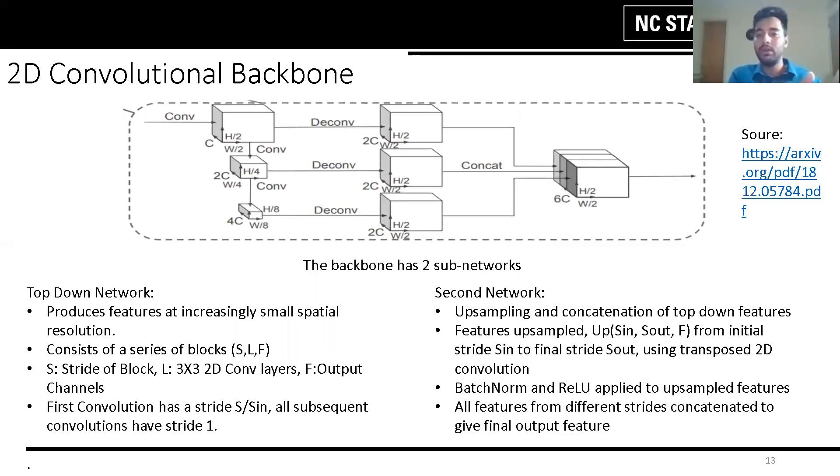One top-down network can be characterized by a series of blocks followed by batch normalization and ReLU function which produces features at increasingly small spatial resolution and the second network performs upsampling of each of the features.